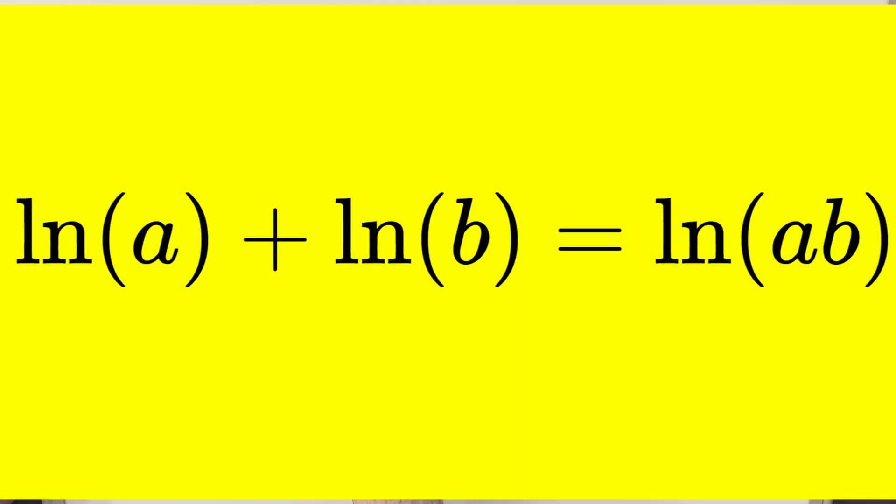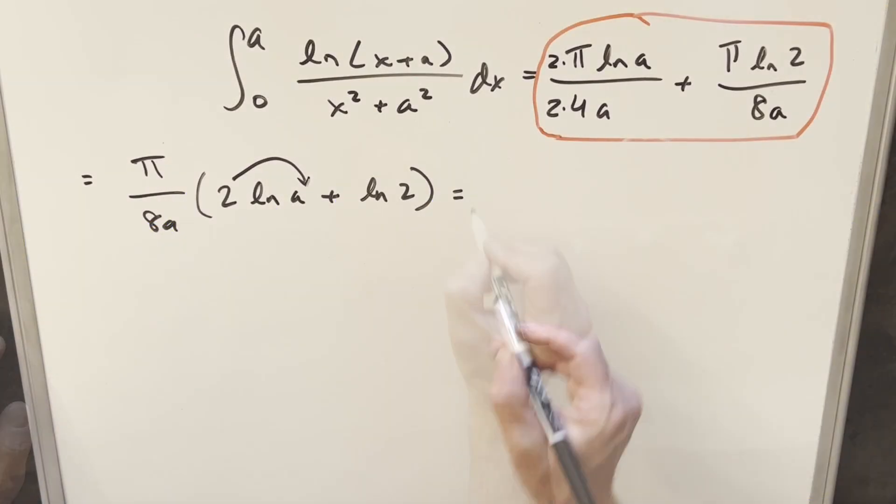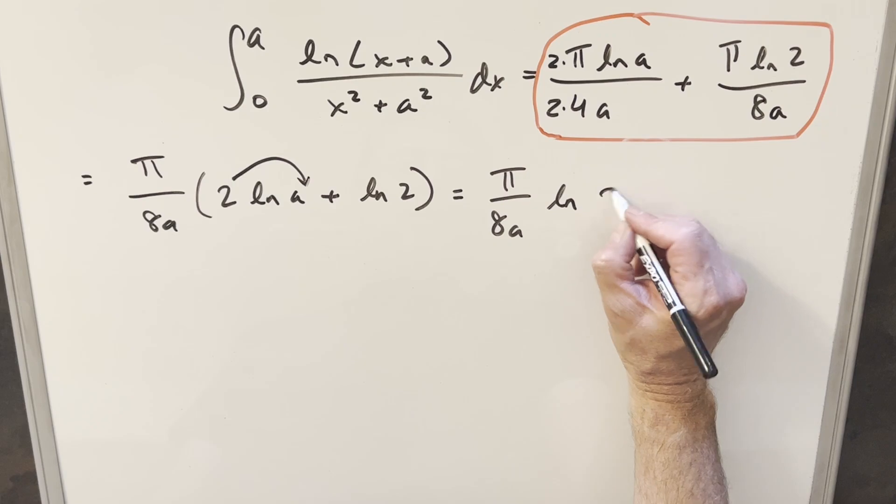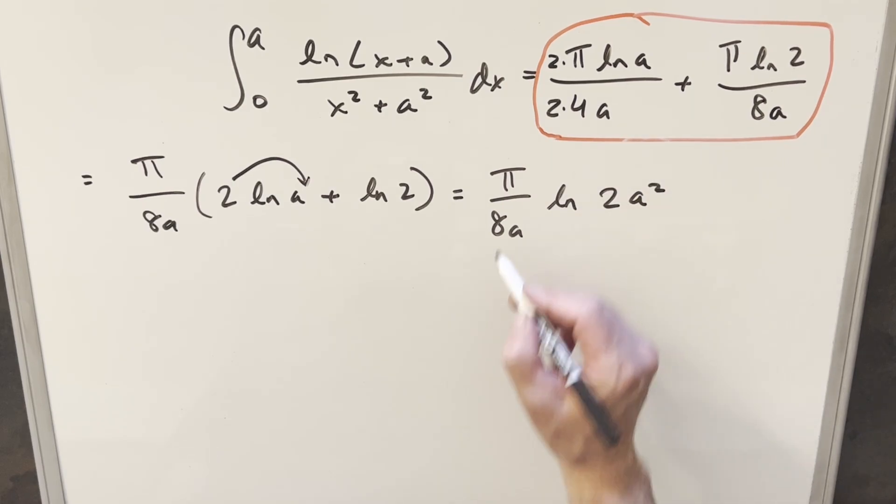Then what I can do is I can bring this 2 into the exponent on A. Then combining these, we're adding. So with log properties, we can bring it together. And so for my final solution, we just have pi over 8A natural log 2A squared, and that's it.